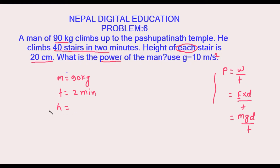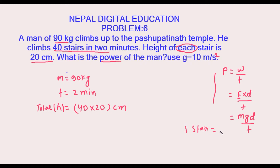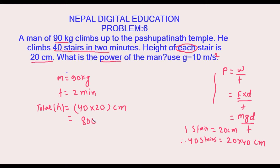So the total height is 40 into 20 centimeters. Each stair is 20 centimeters and we have 40 stairs, so 20 into 40 gives us 800 centimeters total height.